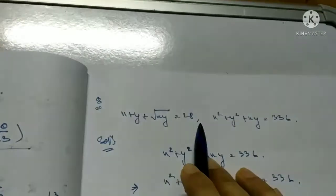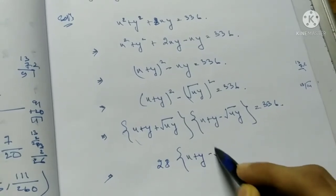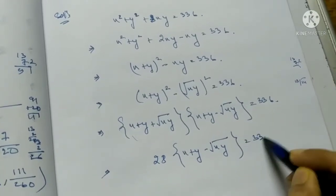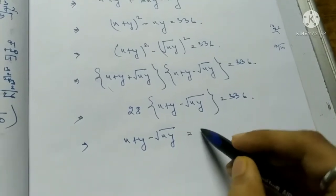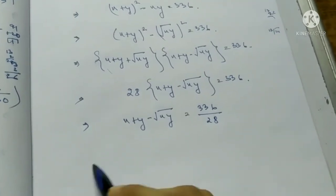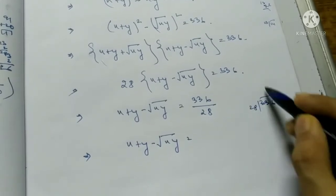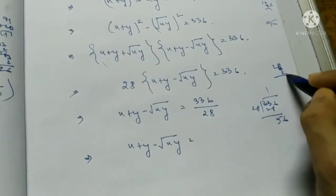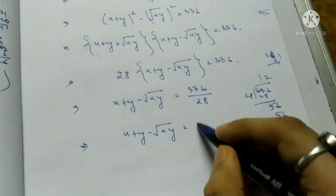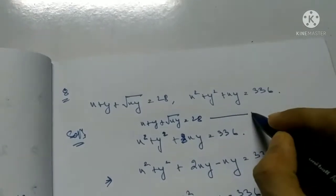Since x plus y plus √xy equals 28 from equation 1: 28 times (x plus y minus √xy) equals 336, so x plus y minus √xy equals 336/28 equals 12. This is equation 2.